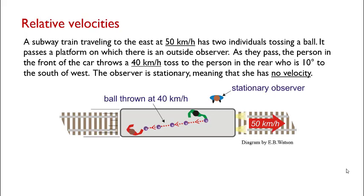They pass a stationary observer on a platform at 50 kilometers per hour, but in doing so they're tossing a ball from front to back at 40 kilometers per hour at 10 degrees south of west. In other words 10 degrees to the wall of the subway car. The observer is stationary meaning that she has no velocity.